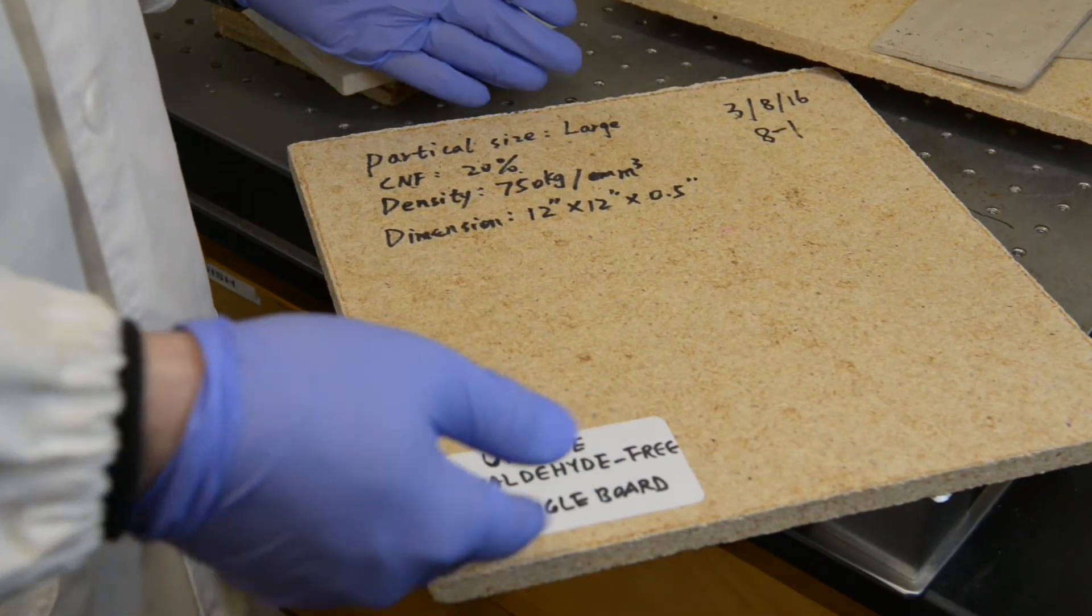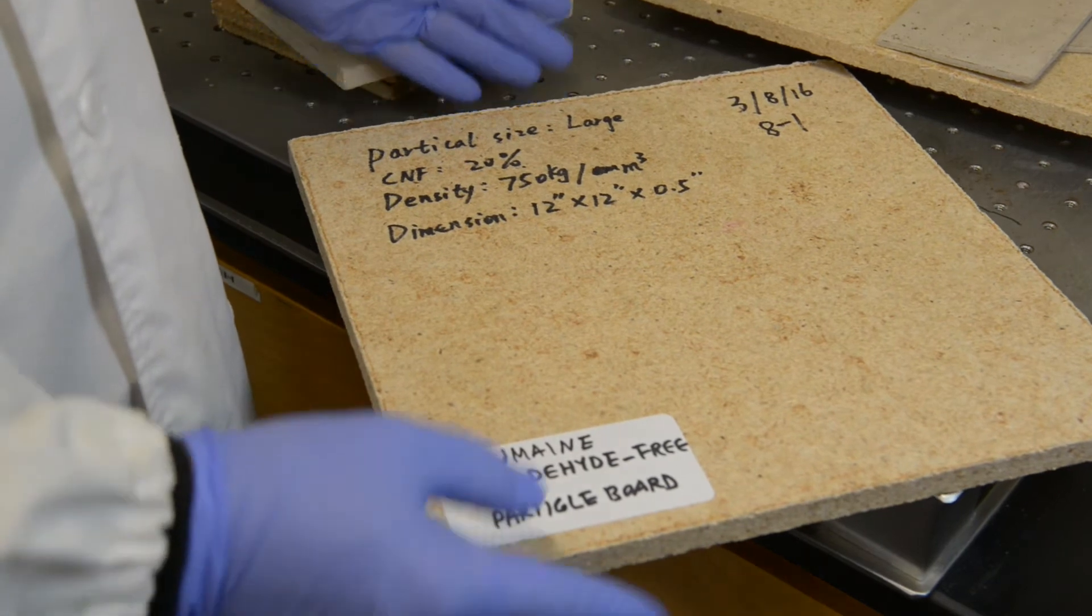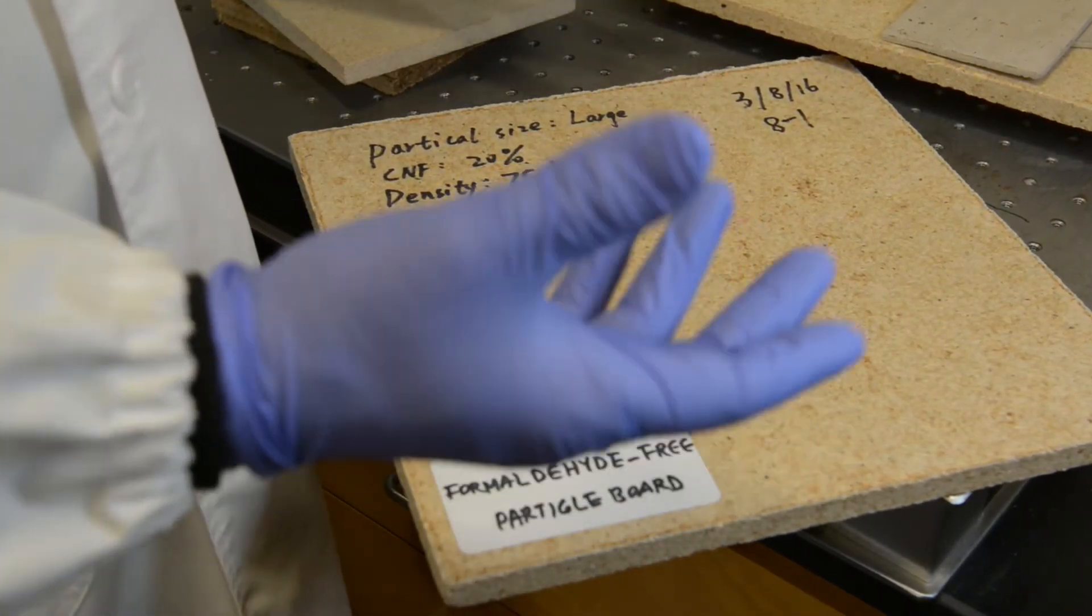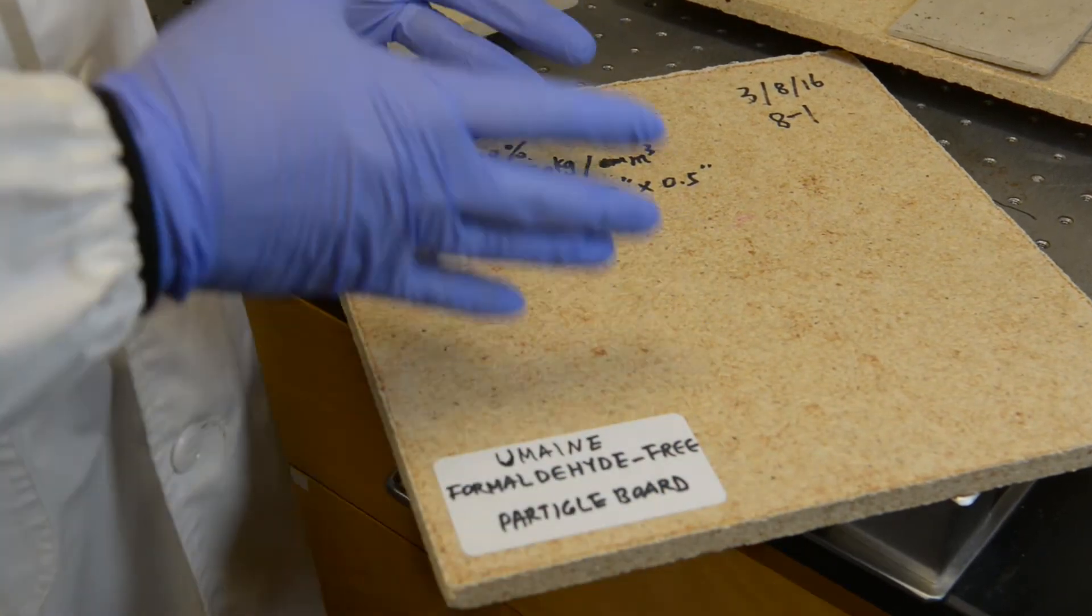This is one example of the University of Maine formaldehyde-free particle board. This is made by just combining wood particles with nanocellulose, removing the water mechanically. So we are not using any heat at this stage.